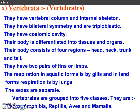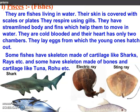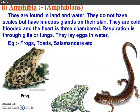Fishes: their skin is covered with scales or plates. They respire using gills. They have a skeleton made of cartilage, like shark and rays. For example, tuna, rohu, etc.